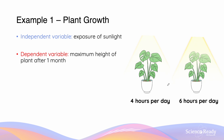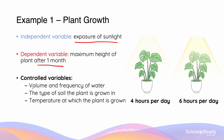If we've investigated the effects of water and now want to see what the effect of sunlight exposure is going to be, the dependent variable is still the maximum height of the plant after one month. Except this time, the volume and frequency of watering becomes a controlled variable, as does the type of soil and the temperature at which the plant is grown.